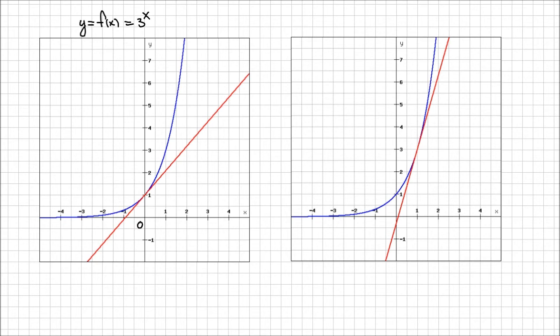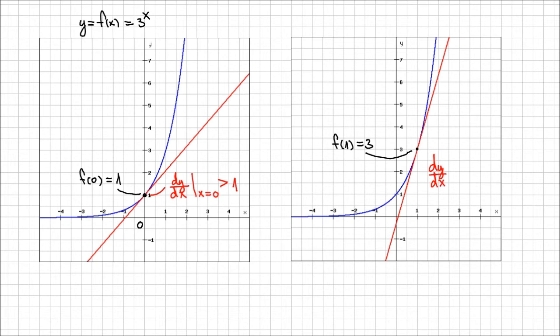I take a higher number for the base and see how this one behaves. When x is 0, I can calculate f of 0 equals 1, but the slope of the tangent to this graph when x is 0 — dy/dx at x equals 0 — is actually greater than 1. It's approximately 1.09, so it's not far from 1 but it's greater than 1. When x is 1, f of 1 equals 3, while dy/dx at x equals 1 we can evaluate from the graph to be around 3.3, so it's greater than 3. For this function 3^x, we get derivative values that are greater than the values of the original function at these two points.